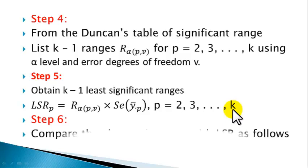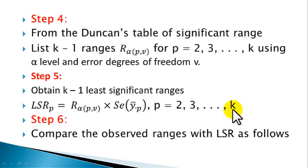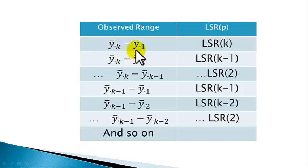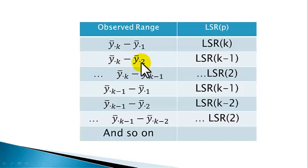Step 6: Compare the observed ranges with the least significant ranges. In the comparison table, the first column is for observed range and the second column is for the least significant range. First, find the range between the largest mean (y-bar dot k) and the lowest (y-bar dot 1), and compare that difference with the least significant range for p equals k. Then find the range between the largest mean and the next lowest, and compare with LSR for p equals k minus 1. Continue until every pair of treatment means is covered.